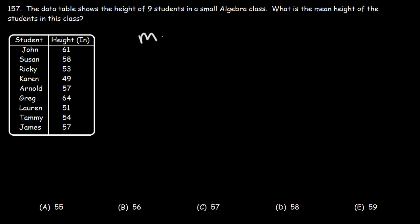In order to calculate the mean, all we need to do is take the sum of all the numbers and divide it by the data points that we have. So let's add up these nine values.